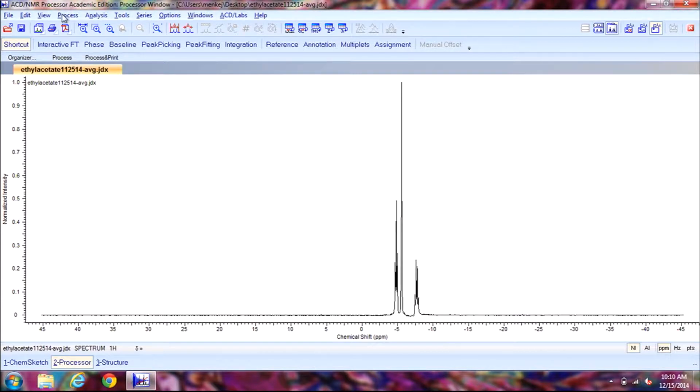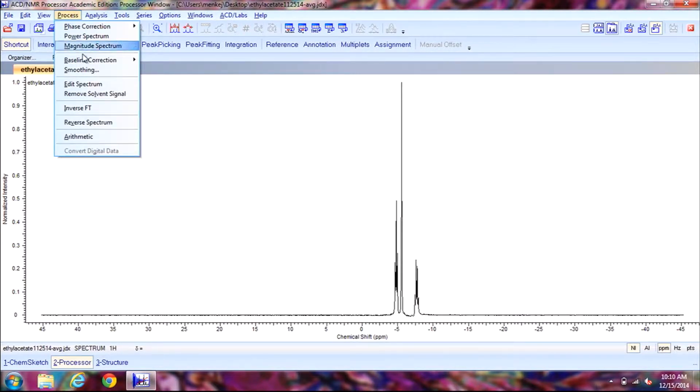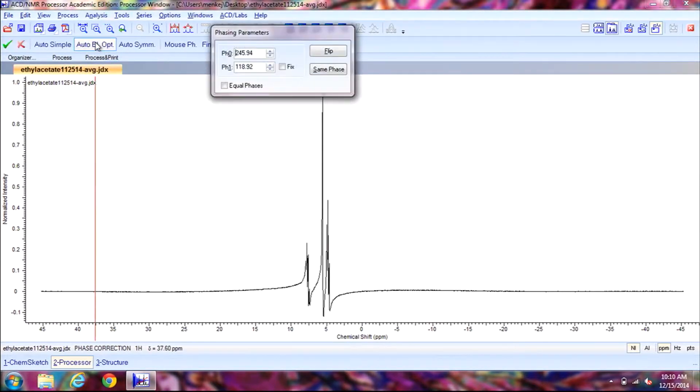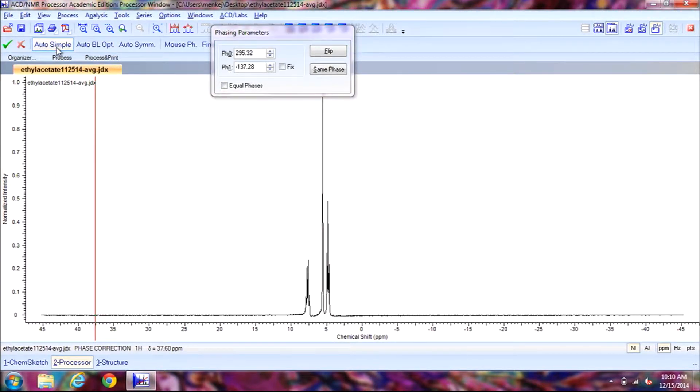Next click on process and then go down and select reverse spectrum. Now we're going to click on phase and then move over to click on auto simple. And then just click on the green check mark to exit out.